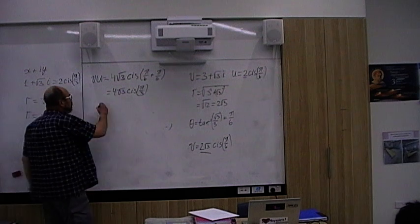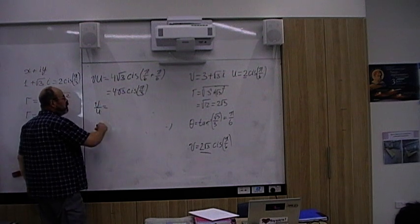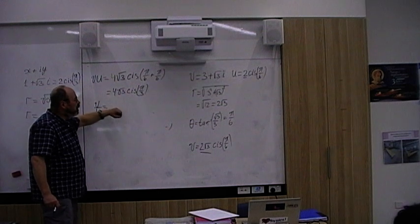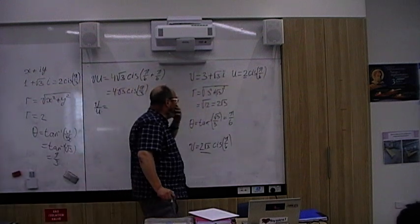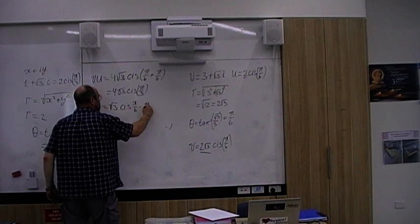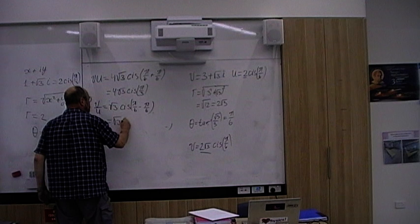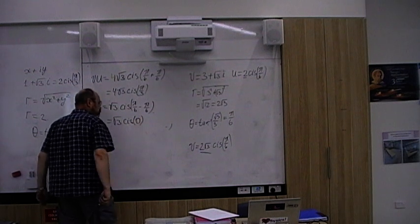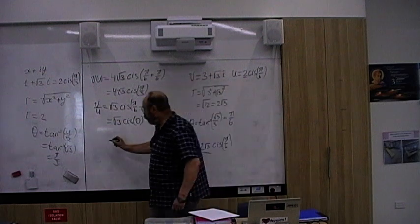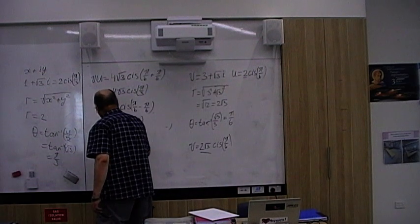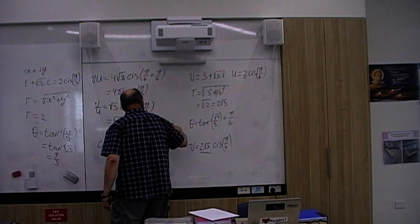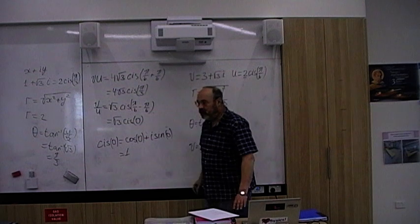Even more easy if we divide them. v divided by u will equal 2 root 3 divided by 2, so we get root 3 cis pi over 6 minus pi over 6, which is root 3 cis 0. What is cis 0? It's cos 0 plus i sin 0, which is just 1, so it becomes root 3.